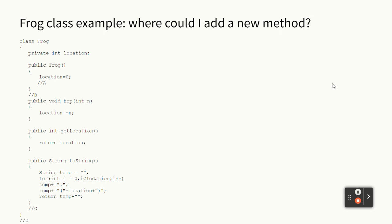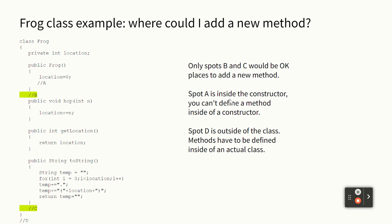If we wanted to add a new method that made the frog say ribbit, could we put it at A? No, you can't put a method inside the constructor. Could we put it at B? How about C? Is B better than C or C better than B? How about D - can we put it at D? No, because the Frog class is over right above D and you can't just put a method in space. So only spots B and C would be okay for a new method. Spot A is inside of the constructor, and D is outside of the class - for it to be a method it has to be inside of a class. The order doesn't matter - toString could be the first thing above the constructor even.